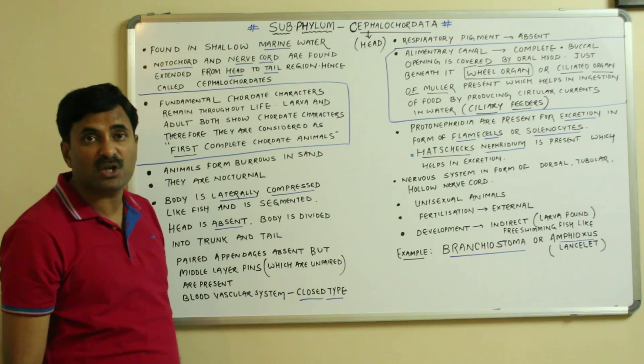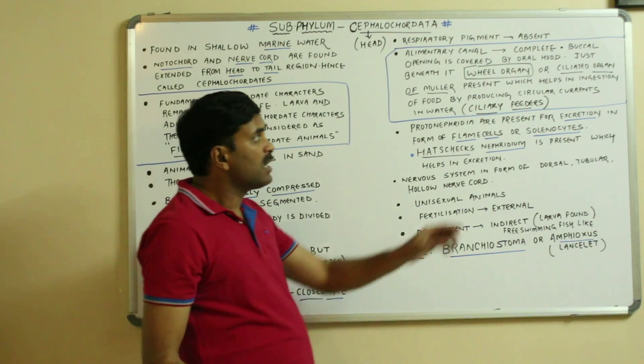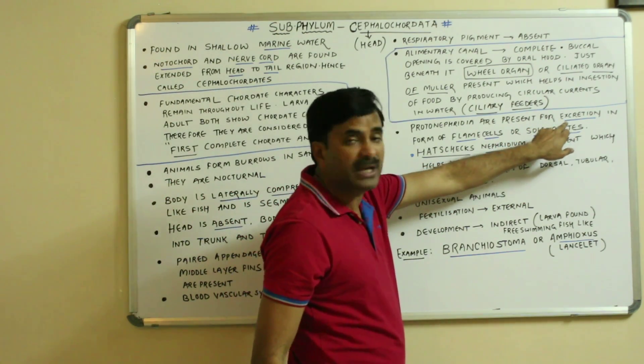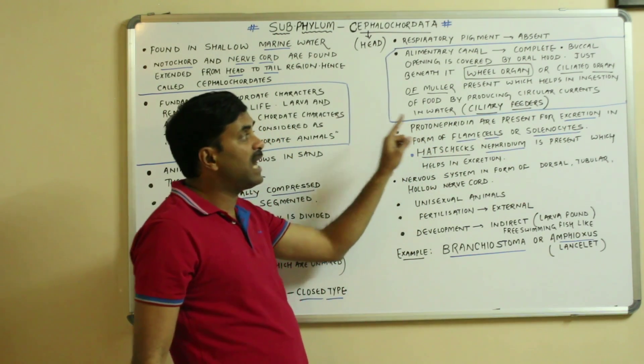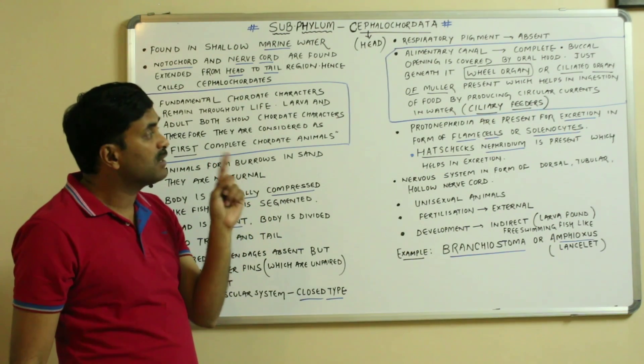How does excretion occur in them? Protonephridia are present for excretion in the form of flame cells or solenocytes.